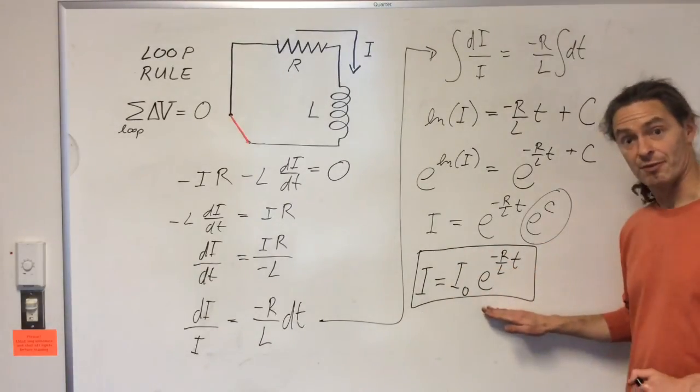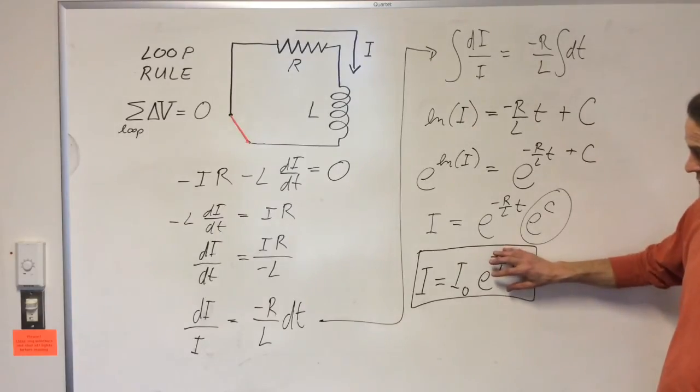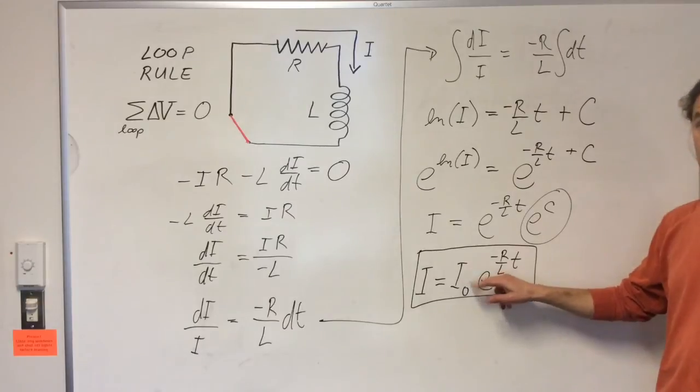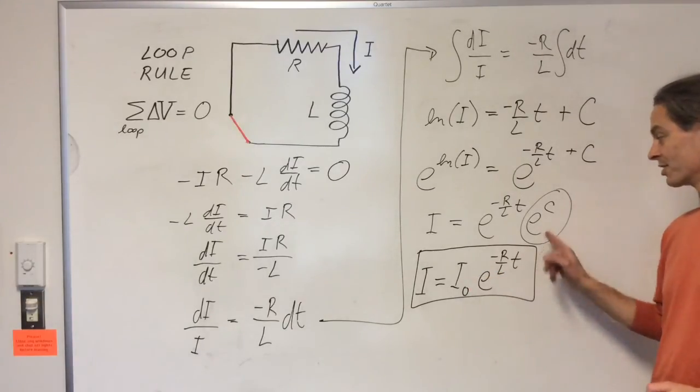So let's look at what this result means. At time zero, we'll have e to the zero is one. The current will just be its initial value. That makes sense. That's how we found this value of this constant in the first place.